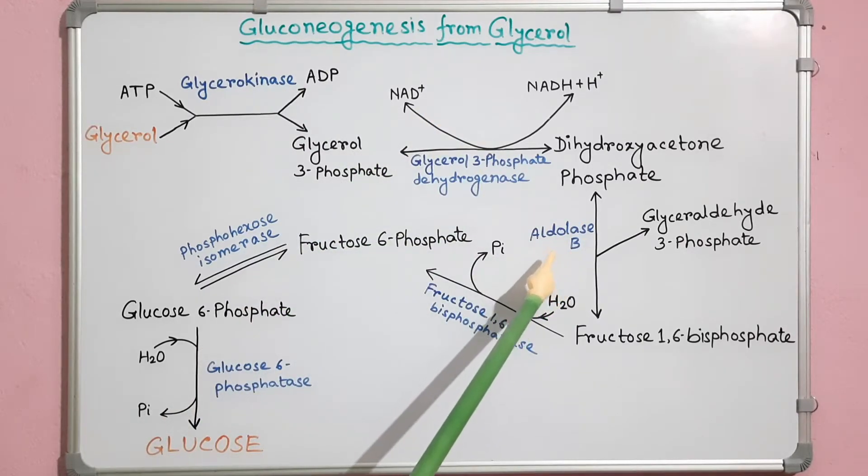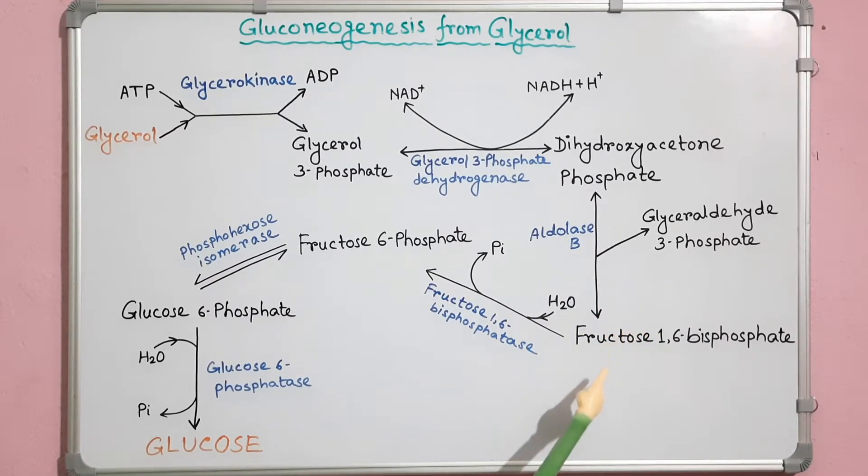Aldolase B then condenses dihydroxyacetone phosphate with glycerol-3-phosphate to form fructose-1,6-bisphosphate. Fructose-1,6-bisphosphate then converts into fructose-6-phosphate by fructose-1,6-bisphosphatase enzyme.